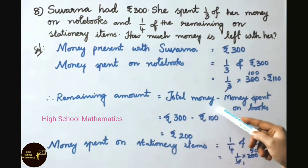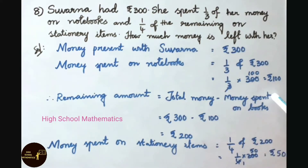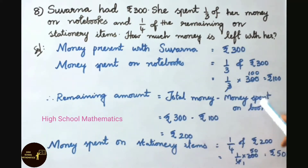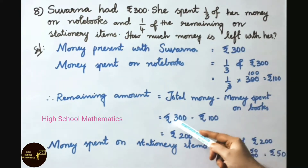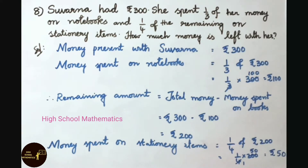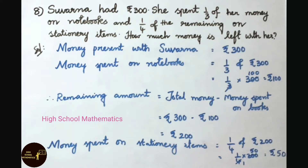Remaining amount equals total money minus money spent on books: 300 minus 100 equals 200 rupees. Next, she spent money on stationary items, which equals one fourth of 200 rupees. That equals 1/4 into 200. 4 ones are 4, 4 fifties are 200. Therefore, the answer is 50 rupees spent on stationary items.